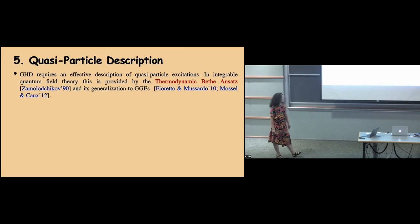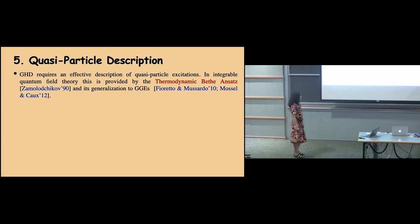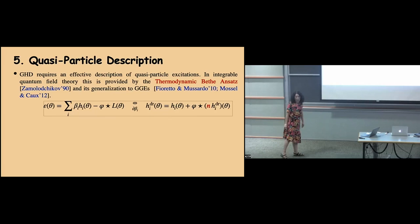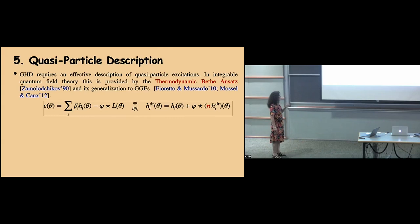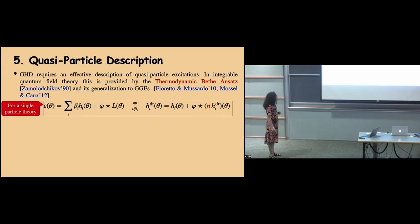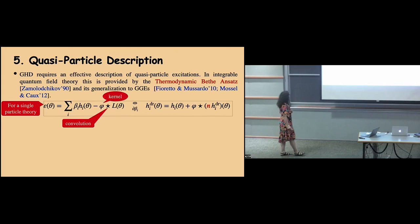We need a description of the quasi-particle excitations in GHD. For integrable models we are very lucky because the Bethe ansatz provides just that. We use the thermodynamic Bethe ansatz based on the scattering matrix. The TBA for integrable QFT was formulated by Zamolodchikov, and it can be extended to GGEs quite easily, essentially replacing energy by a sum of all conserved quantities. The TBA equations involve the pseudo-energy, a convolution with the kernel, and the L-function for Fermi-like statistics.